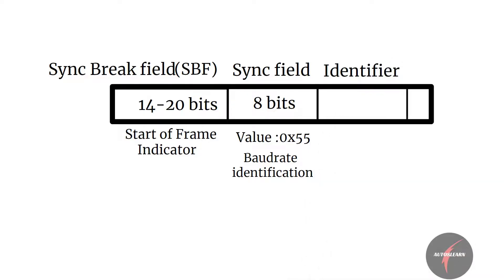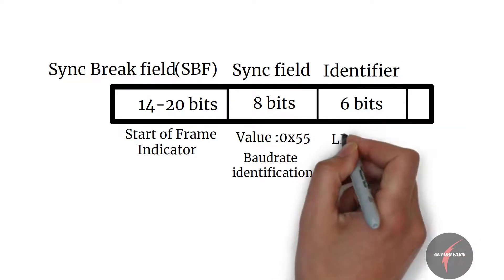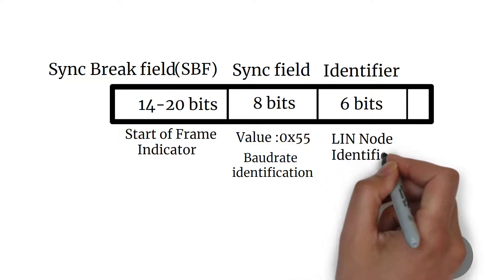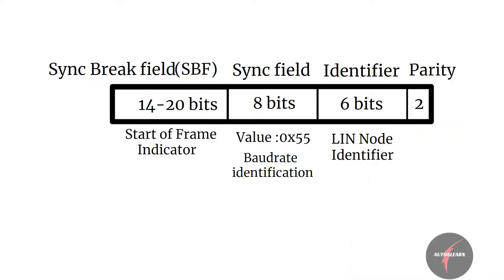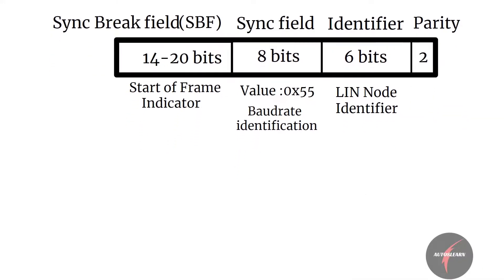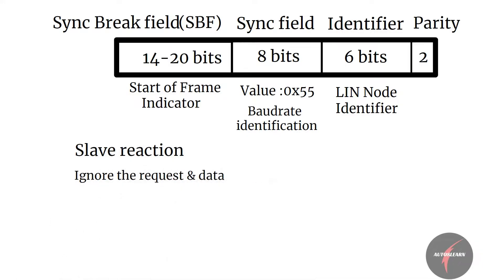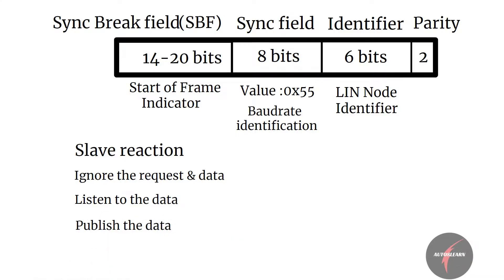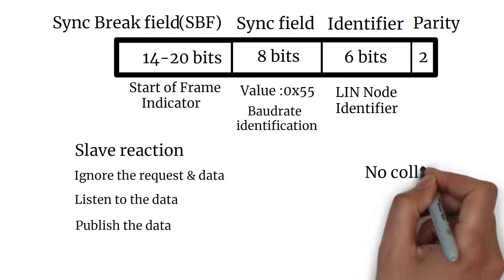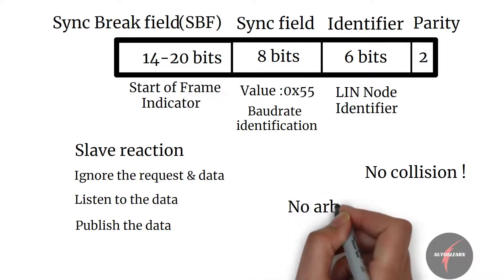The identifier field is 6 bits long and is used to identify the node that has to react to the LIN header. The validity of the LIN header identifier field is determined by parity bits. Based on the header, a LIN slave node would either ignore the request and subsequent data transmission, listen to data sent by another node, or publish data in response to the header. Since one slave is polled for information at a time by the master, there is zero collision risk and no need for arbitration.